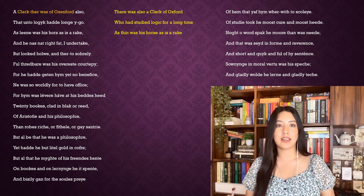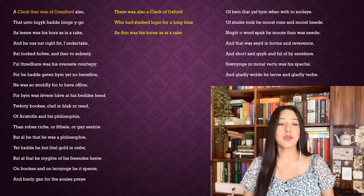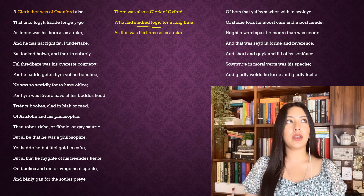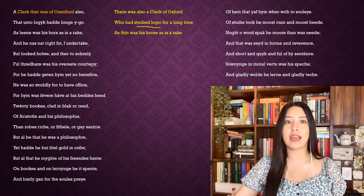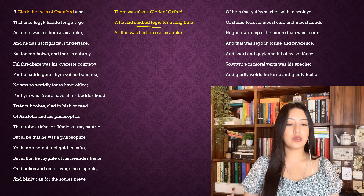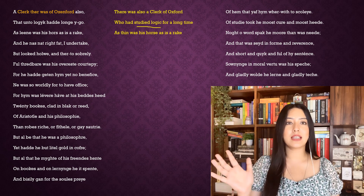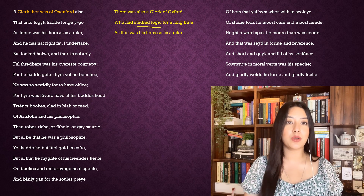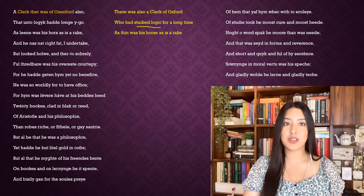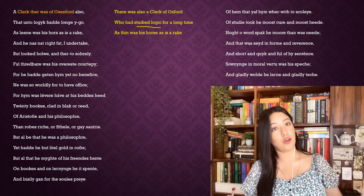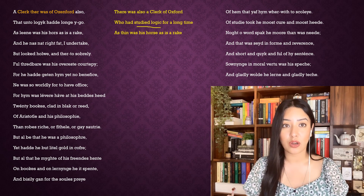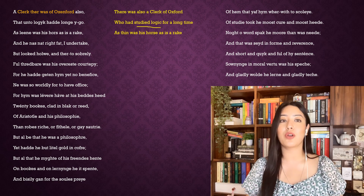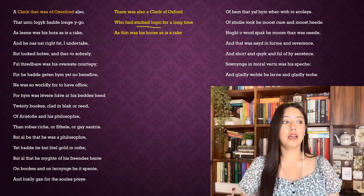Now let us look at the Clerk of Oxford and how Chaucer describes him in the general prologue. There was also a Clerk of Oxford who had studied logic for a long time. Whenever there's a reference to logic, you'll know that Aristotle has to be mentioned — I've dealt with Aristotle's system of syllogism, deductive and inductive reasoning in my Aristotle and Francis Bacon videos. His horse was as thin as is a rake, and even he himself could not be called fat.